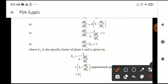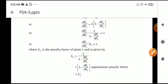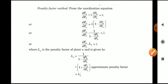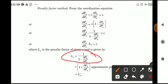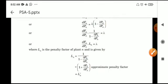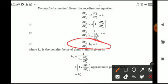So Ln is equal to 1/(1 minus ∂PL/∂Pn). The approximate penalty factor is calculated as 1 plus ∂PL/∂Pn, denoted as Ln dash. Normally in questions we find the penalty factor using the equation 1/(1 minus ∂PL/∂Pn). The equation dFn/dPn into Ln equals lambda gives us the received power cost.